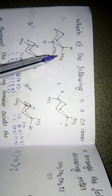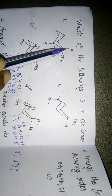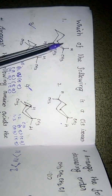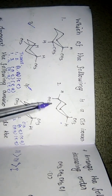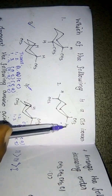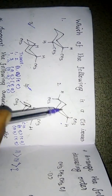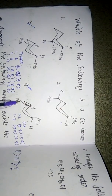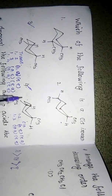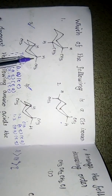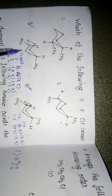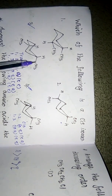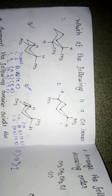Analyzing the options for the cis isomer question: Option 1 has both methyl groups equatorial — that is a trans isomer. Option 2 has one methyl axial and one equatorial — a trans form. Option 4 has the first methyl axial and the third equatorial — giving a trans form for a 1,3 arrangement. Option 3 has both methyl groups equatorial in a 1,3 arrangement, which gives a cis conformation with no diaxial interaction — so option 3 is the cis isomer.